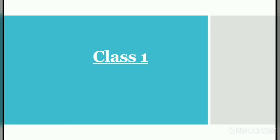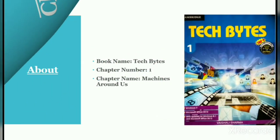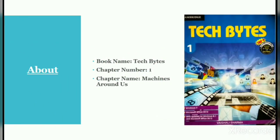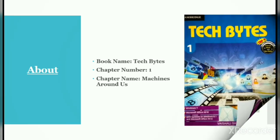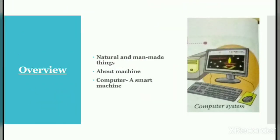Dear student, welcome to Study Bus, your online study channel. Today we are going to study computer subject for Class 1. The book name is Tech Bytes, Chapter 1, and the name of the chapter is 'Machines Around Us.' In this chapter we are going to study about natural and man-made things, all about machines, and the computer — a smart machine.